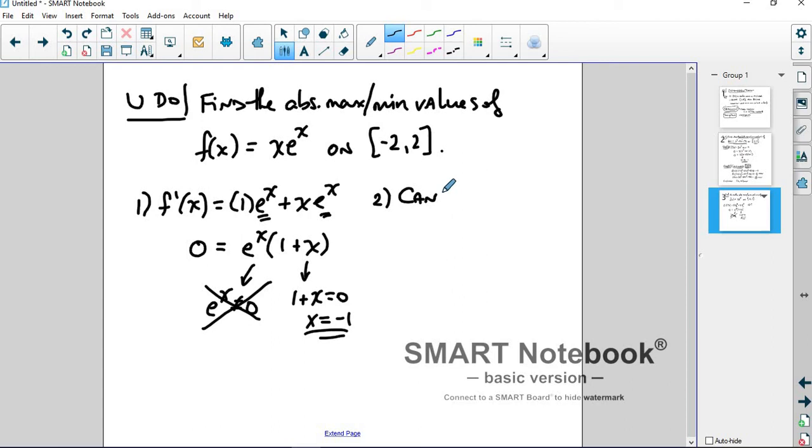To do the candidates test, we're going to take f(-2), f(-1), and f(2) to look for the mins and the maxes. So we get -2e^(-2). We need to get an approximation for that, so just plug it into your calculator.